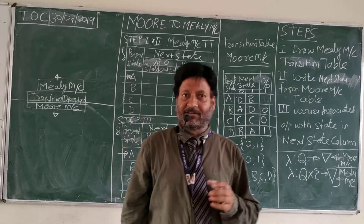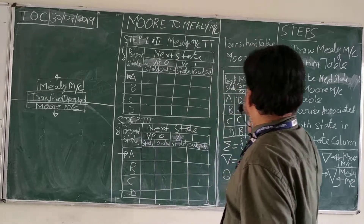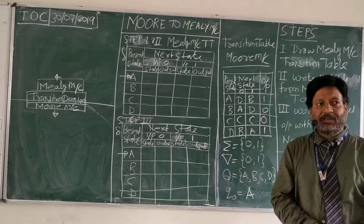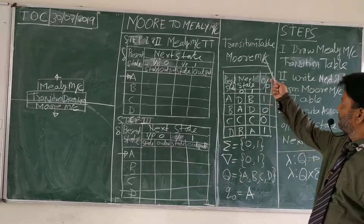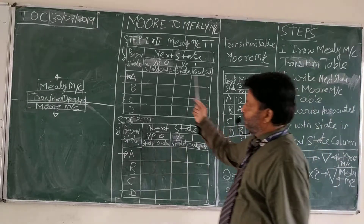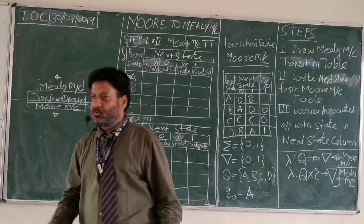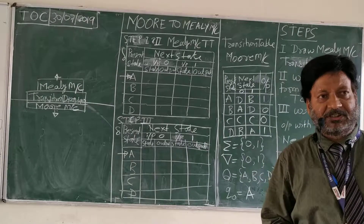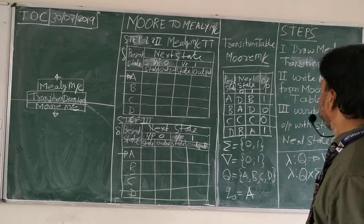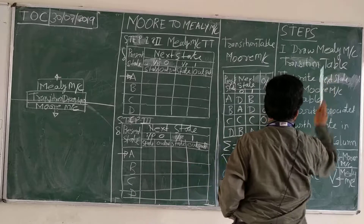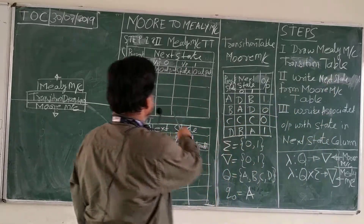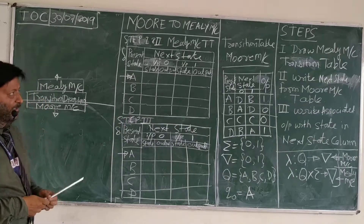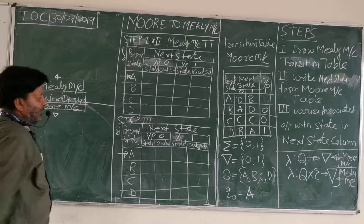Let us take an example. The transition table for the Moore machine has been given. We can convert this Moore machine transition table into a transition diagram also — we will convert that as well. The first step is to draw the Mealy machine transition table. So, we have drawn the Mealy machine transition table. This is the Mealy machine transition table, also represented by delta.